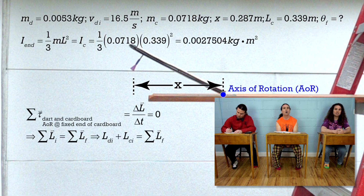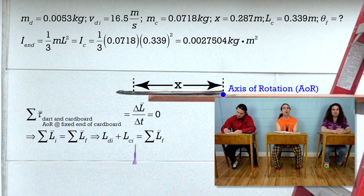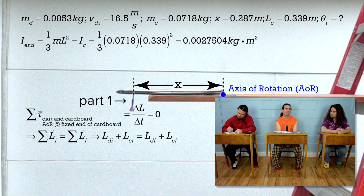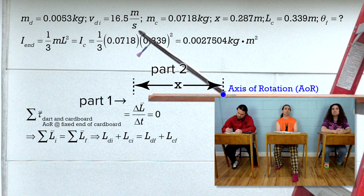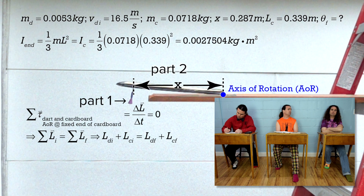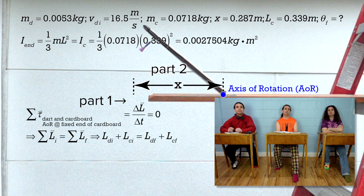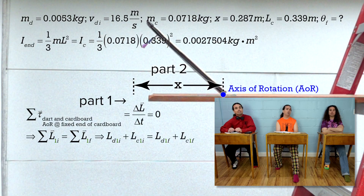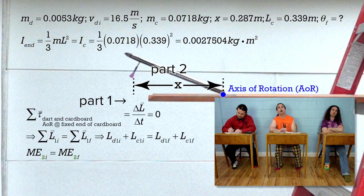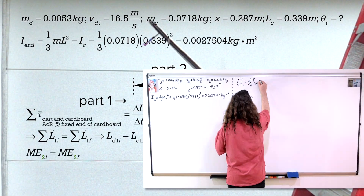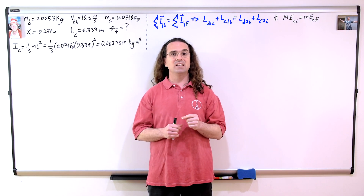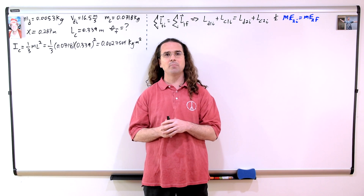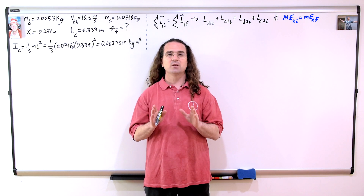Before the collision, we have the initial angular momentum of the dart plus the initial angular momentum of the cardboard. After the collision, we have the final angular momentum of the dart plus the final angular momentum of the cardboard. The collision is just the first part of the problem. After the collision, the dart and cardboard rise together and we know mechanical energy is conserved while the cardboard rotates because there is no mechanical energy added to or removed from the system via friction. So part one, the collision, we use conservation of angular momentum, and part two, while the cardboard rotates, we use conservation of mechanical energy. This problem has two parts.